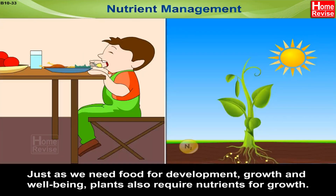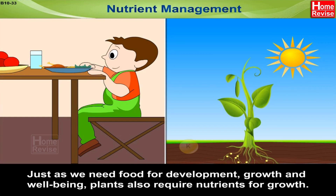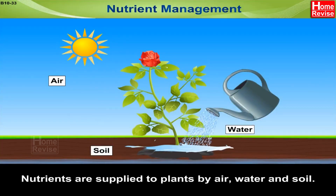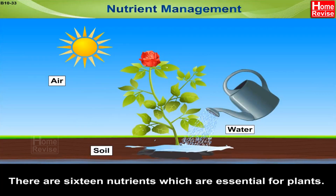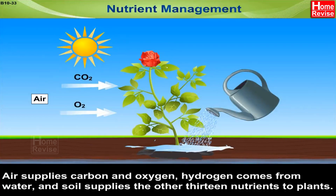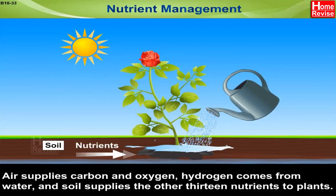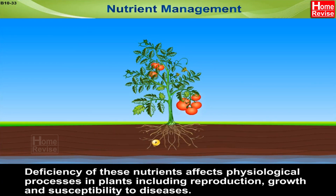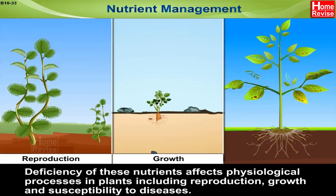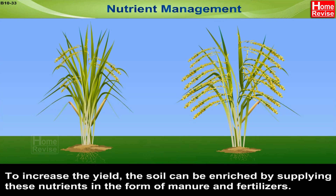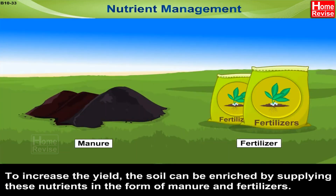Nutrient management: just as we need food for development, growth, and well-being, plants also require nutrients for growth. Nutrients are supplied to plants by air, water, and soil. There are 16 nutrients which are essential for plants. Air supplies carbon and oxygen, hydrogen comes from water, and soil supplies the other 13 nutrients to plants. Deficiency of these nutrients affects physiological processes in plants, including reproduction, growth, and susceptibility to diseases. To increase yield, the soil can be enriched by supplying these nutrients in the form of manure and fertilizers.